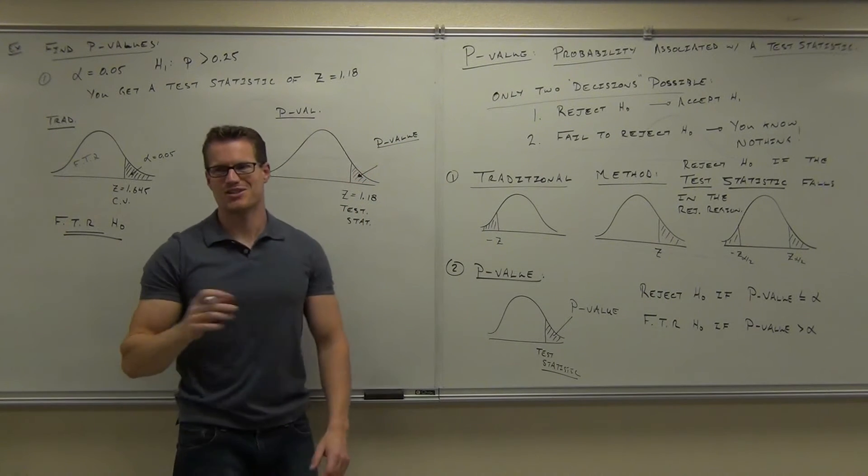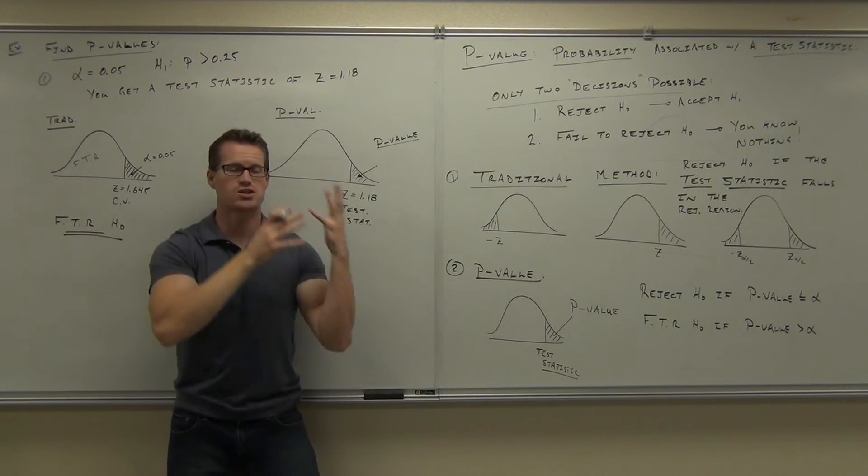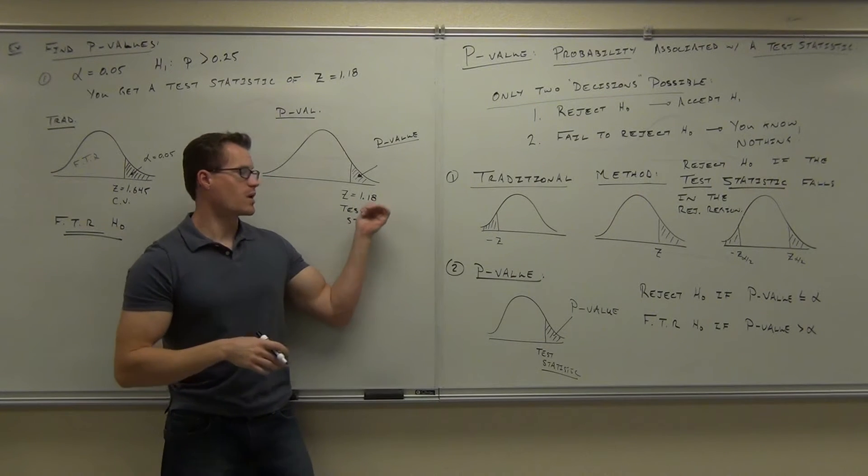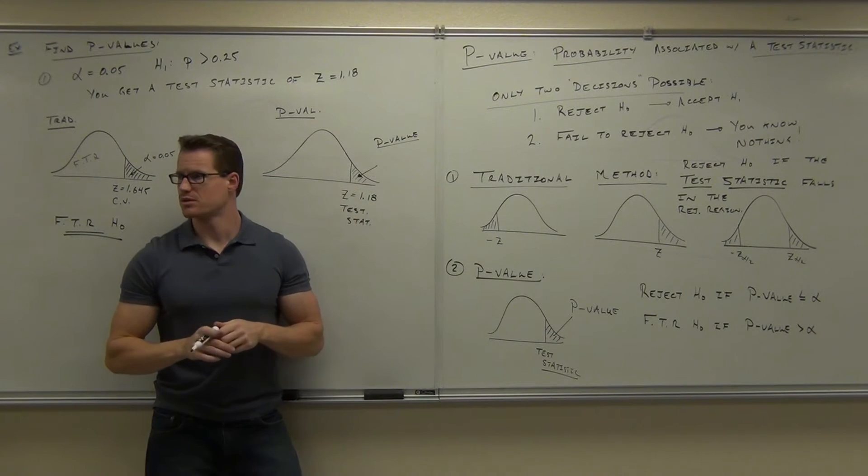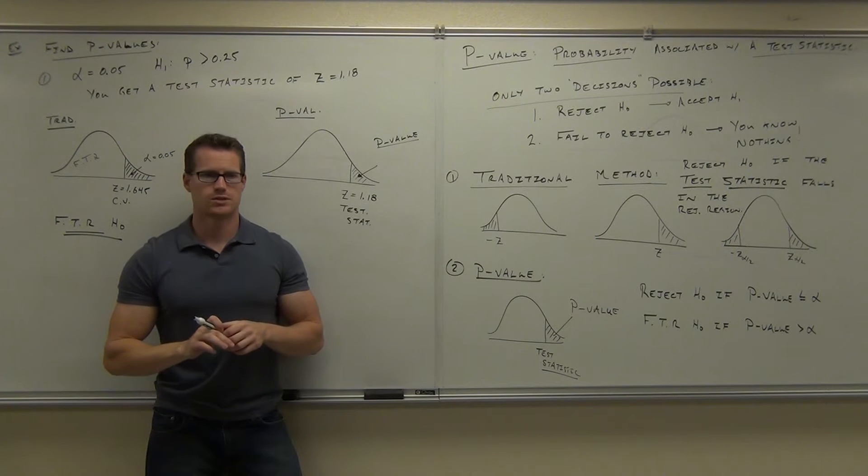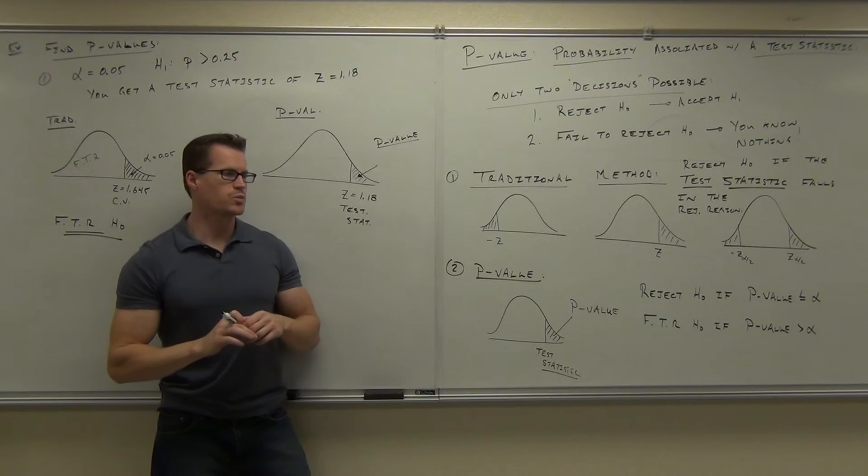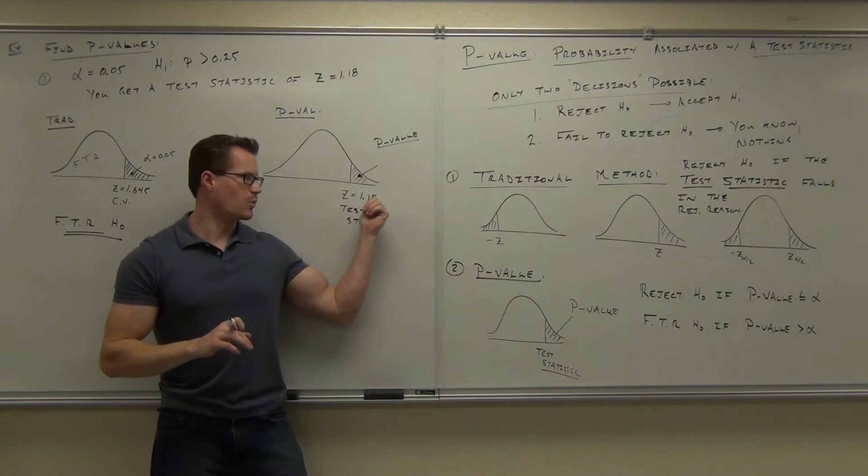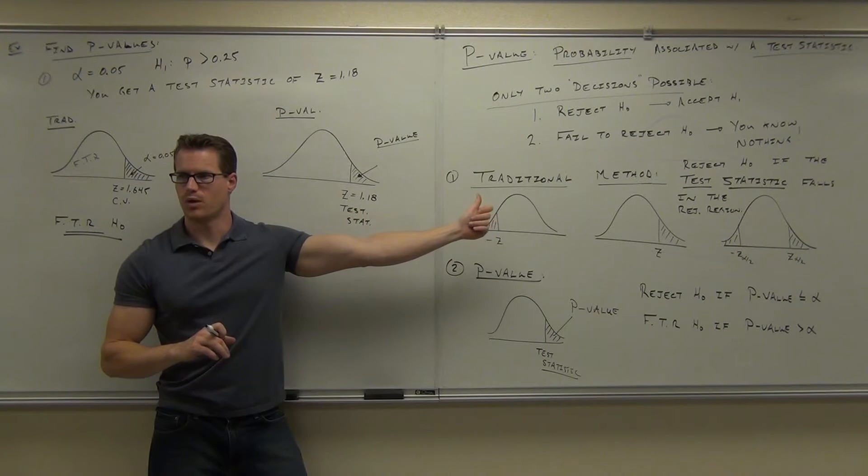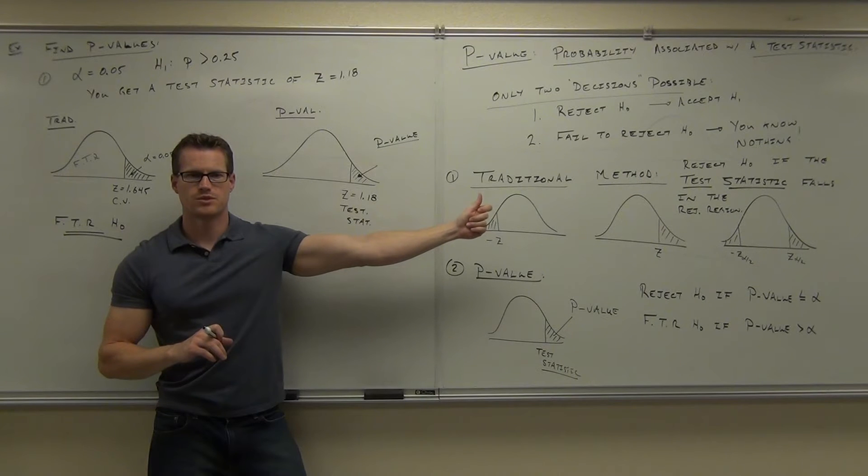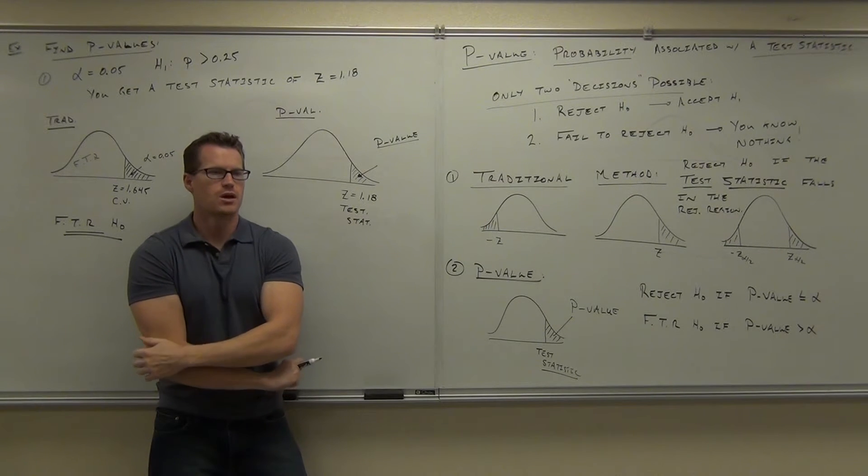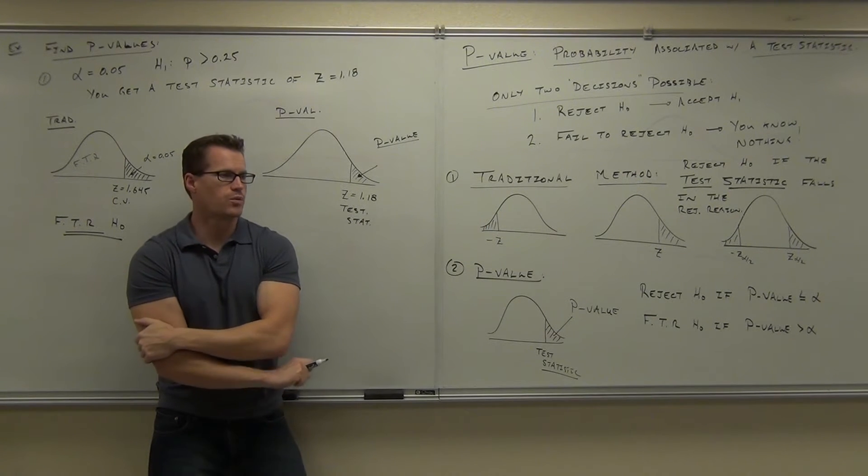Now this is all going to come back to you. Chapter 6 is going to smash you in the face right now. Do you remember how to look up areas associated with z-scores? Do you? On your calculator, you put in normal CDF from 1.18 to 10. Remember doing that? On your table, you look up 1.18. So go ahead and do that now. Look up 1.18. You're looking at z-scores now. Look up 1.18.